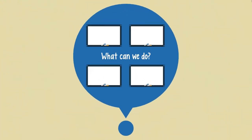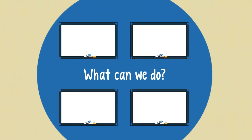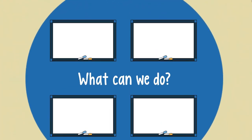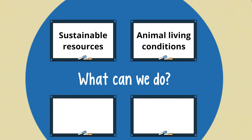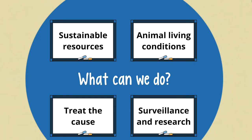Let's say we want to change that and prevent, or at least prepare for, future pandemics. What can we do? We can rethink how we interact with animals. First, we can use resources sustainably. Second, we can improve animal living conditions. Third, let's treat the cause, not the symptom. And fourth, we need more surveillance and research.